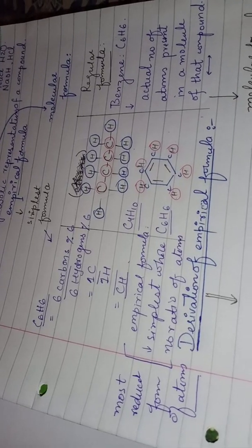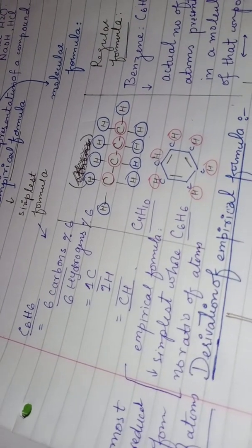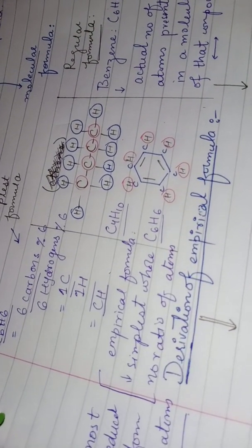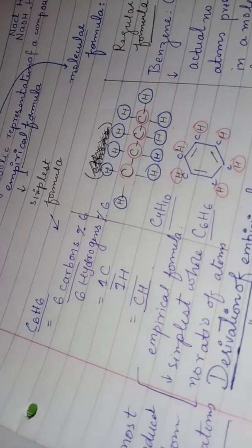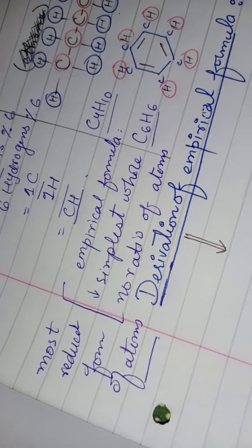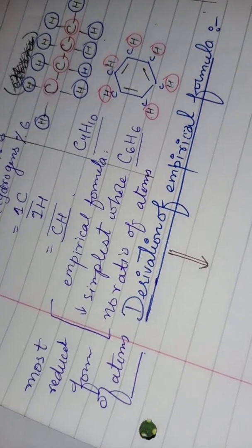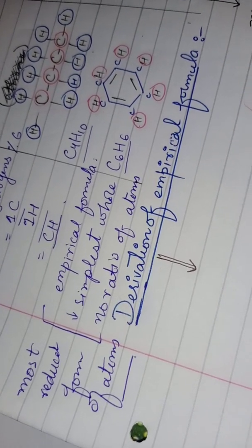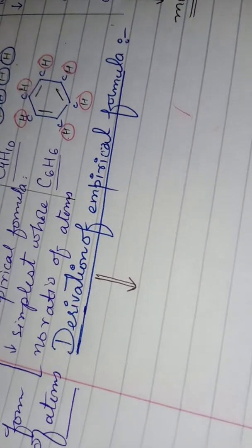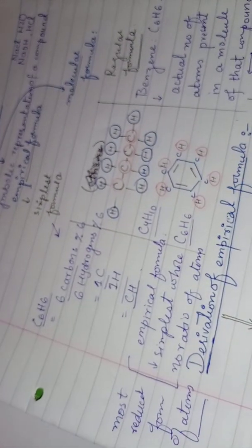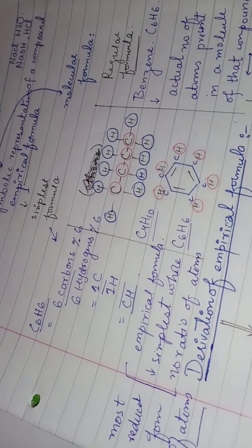To summarize: we have discussed the chemical formula as a symbolic representation, the empirical formula as the simplest or most reduced form of atoms in a compound, and the molecular formula as the regular formula showing the actual number of atoms. In my next lesson, I will derive the empirical formula and then the molecular formula.